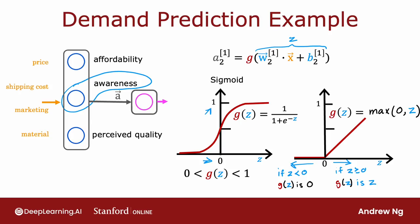This activation function has a name, it goes by the name ReLU with this funny capitalization. And ReLU stands for, again, a somewhat arcane term, but it stands for rectified linear unit. Don't worry too much about what rectified means and what linear unit means. This was just a name that the authors had given to this particular activation function when they came up with it. But most people in deep learning just say ReLU to refer to this g(z).